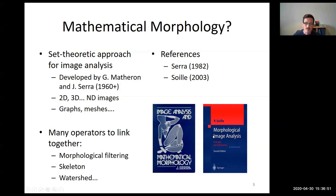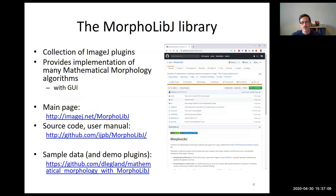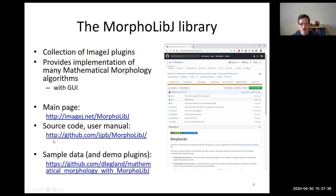MorphoLibJ is a collection of plugins for ImageJ. Many have a graphical user interface to facilitate parameter setting and provide quick feedback on the effects of different parameters. The main page is on ImageJ, where you can find user manuals. Additional documentation and plugins used during this session can also be found on the GitHub page for MorphoLibJ.